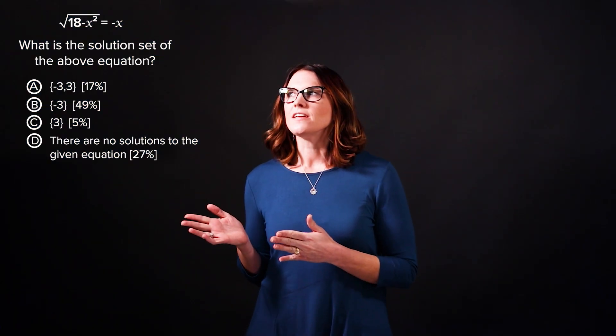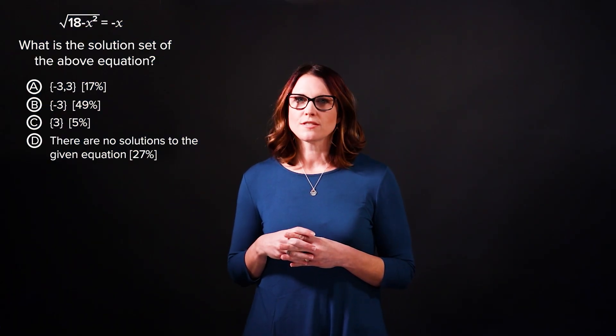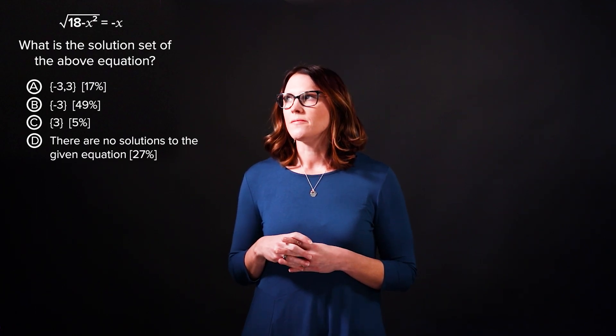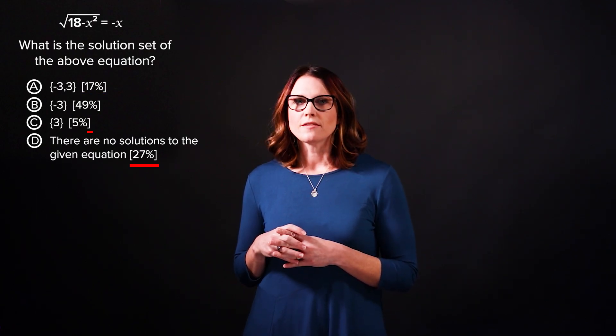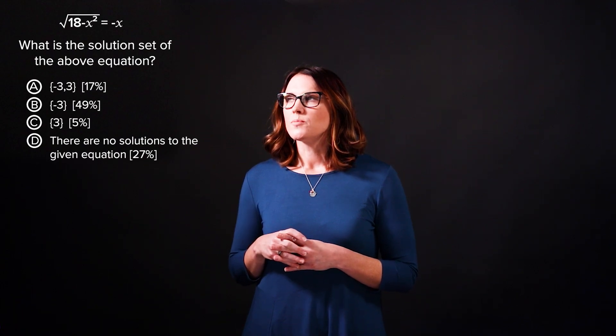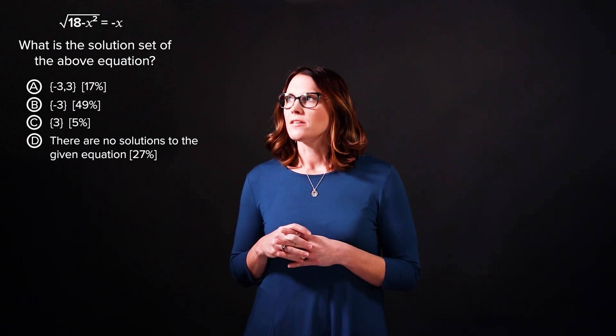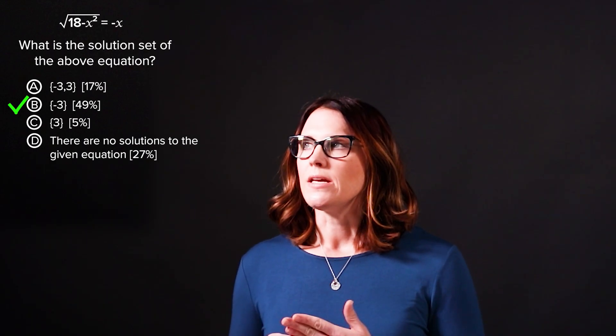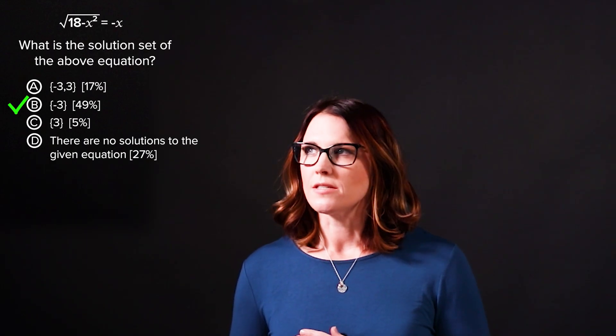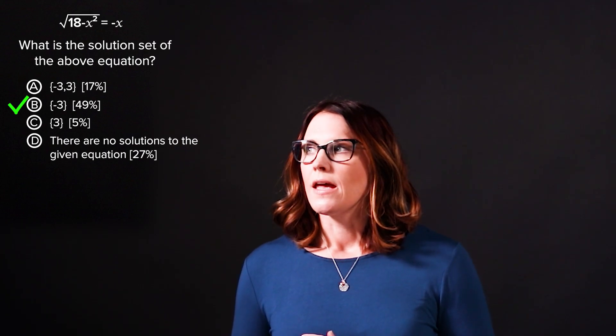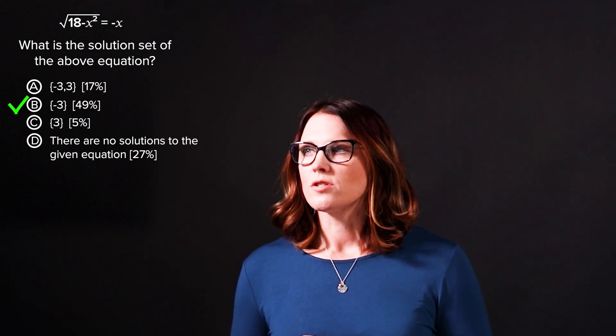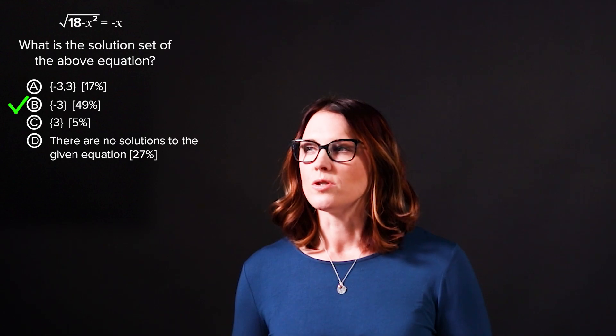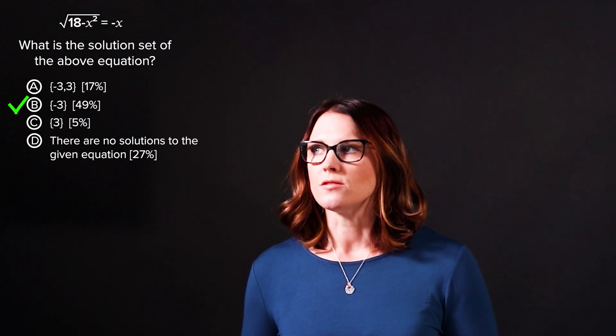As you can see, this problem asks for the solution set of a radical equation. I'd like to point out the percentages to the right of each answer choice, showing the percentage of students that answered each choice. As you can see, the correct answer B was chosen 49% of the time, which is pretty low, and the incorrect answer D was chosen 27% of the time, which is pretty high for an incorrect answer.